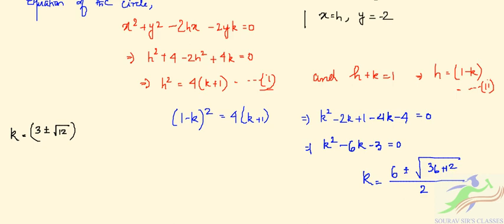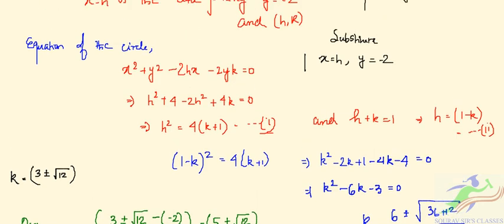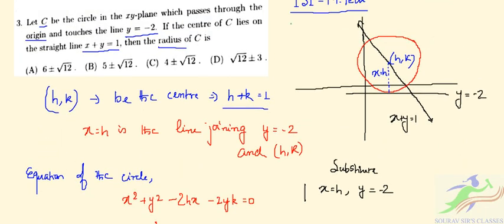Now we find the radius, which equals the distance from the center (h, k) to the tangent line y = -2. This distance is k - (-2) = k + 2. Substituting the values of k, the radius = (3 ± √12) + 2 = 5 ± √12. Checking the options, option B gives 5 ± √12, so option B is the correct answer for question number 3.